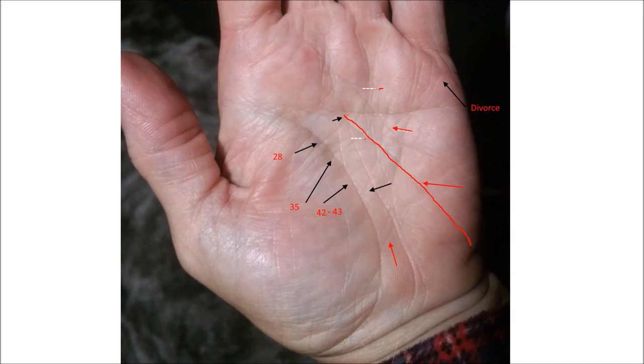And on the lifeline, it shows a travel line which is here. You might not see it, so I'm drawing it. There's a travel line which is around age 42, 43. The lady has confirmed that she has moved around that age from one place to another.